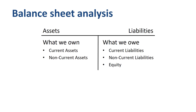The balance sheet is an overview of what a company owns and what a company owes at a specific point in time. What a company owns is called assets. What a company owes is called liabilities and equity. The difference between current and non-current assets is whether the asset will be converted to cash within one year. The difference between current and non-current liabilities is whether the amounts are due within one year or further out.